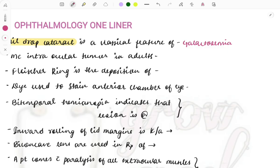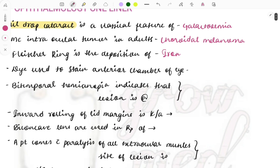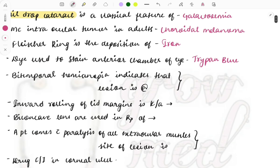Next, the KF ring and the Glacier ring — these are different. The Glacier ring is due to deposition of iron in the eye, which can be seen on examination. Then, the dye used to stain the anterior chamber of the eye is trypan blue. The stains used to stain various parts of the eye is also an important topic. Bitemporal hemianopia indicates that the lesion is at the optic chiasma.